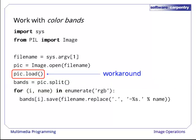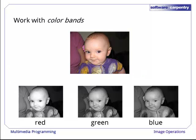Note that the call to load shouldn't be necessary, since this program doesn't ever operate on individual pixels, but is needed to work around a bug in version 1.1.7 of PIL. The result is light where each color signal is strongest and dark where it is weakest. For example, the purple in the baby's shirt shows up bright in blue, but darker in red and green.